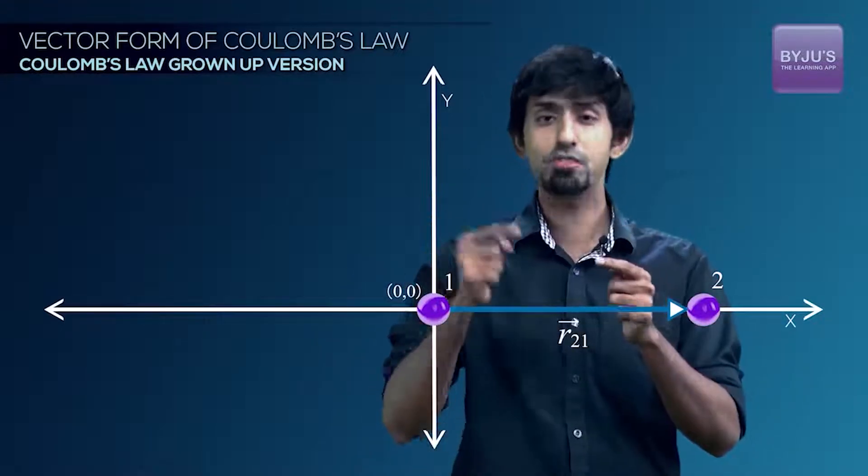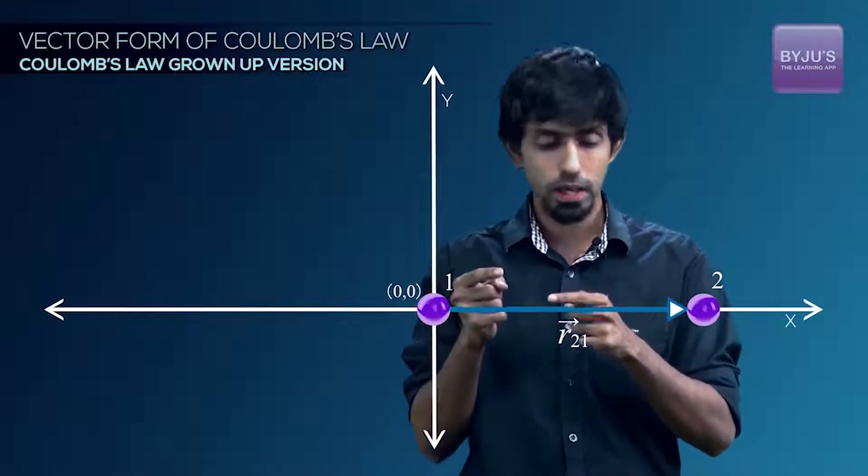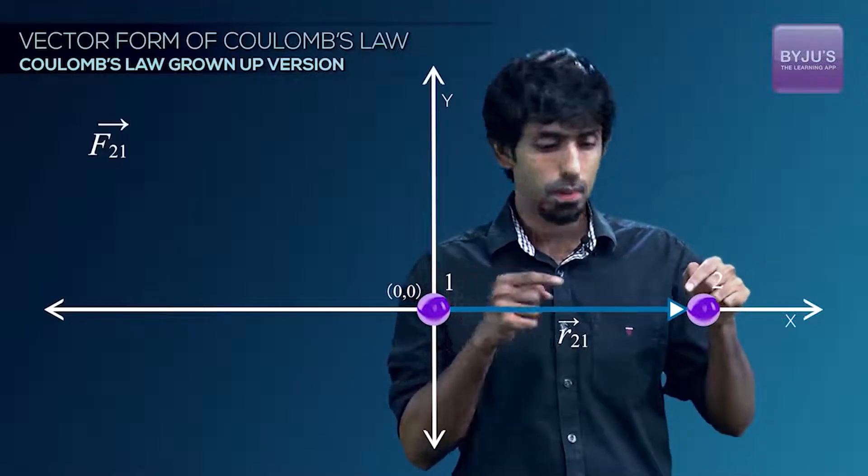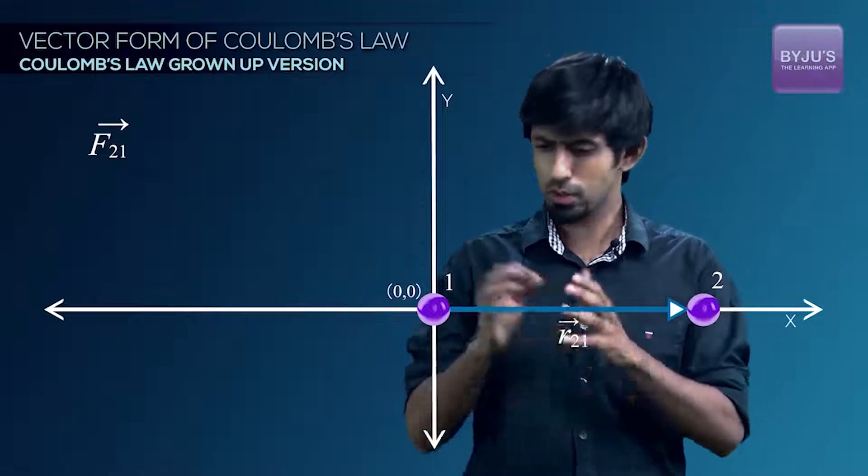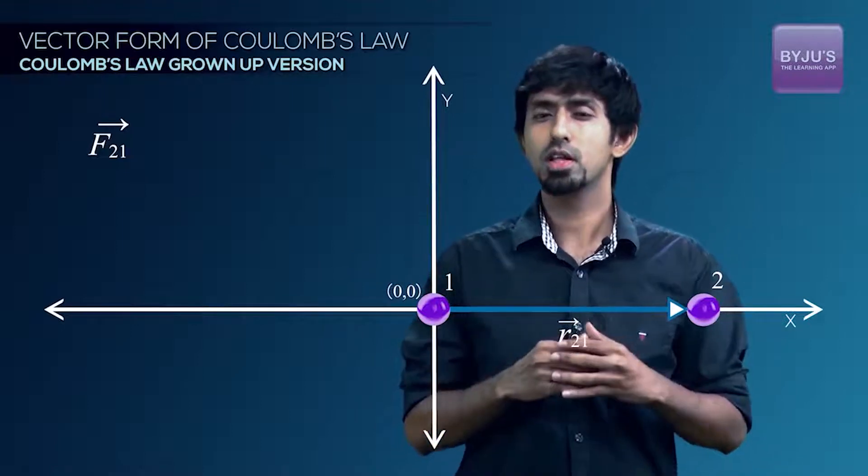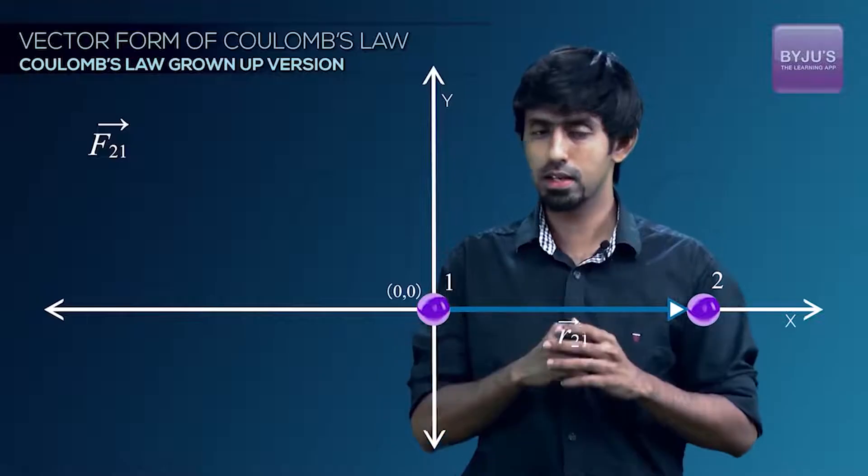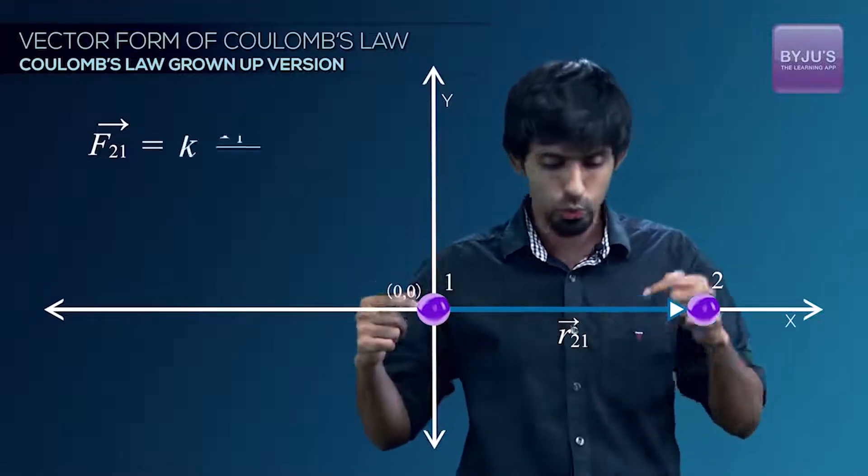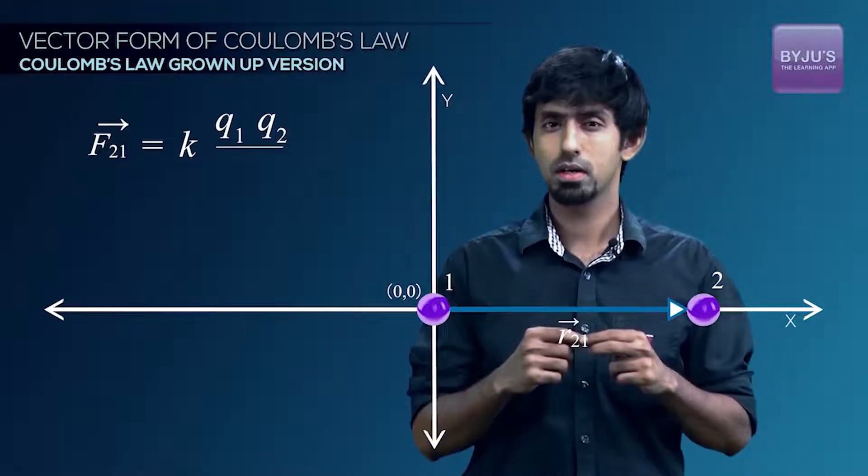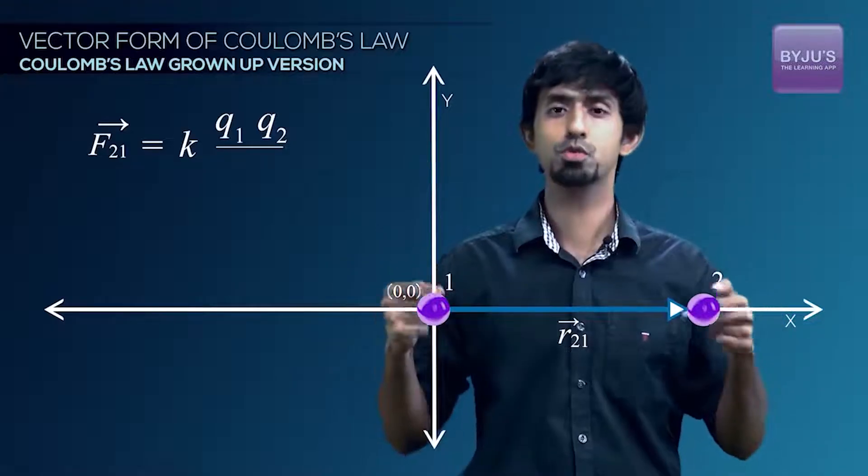Let's define F21 as the force felt by charge 2 because of charge 1. It's some vector, so we need a direction for it. Now we know the magnitude of this vector very easily. It's going to be just K into Q1 into Q2 by the magnitude of the distance between them squared.